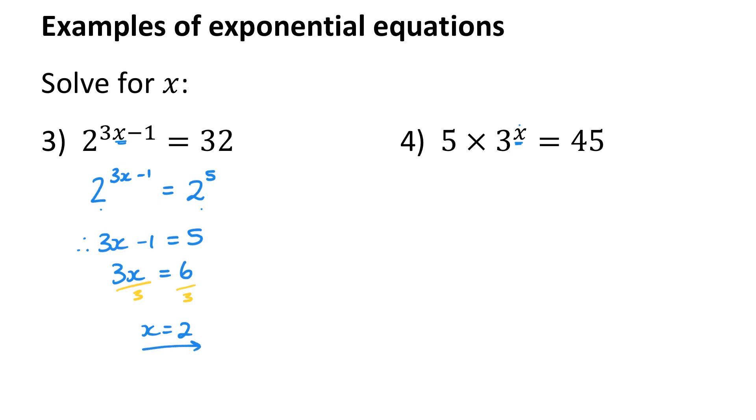In question 4, the exponent just applies to the 3. So the multiplying by 5 is unnecessary. Let's divide both sides by 5. I'm going to get 3^x is 9. Now I can write both sides with the same base. 9 is 3 squared. Therefore, since I've got equal bases, my exponents must be equal and x is 2.